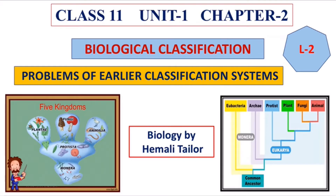They didn't include organisms in groups perfectly. But if we look at Whittaker and Carl Woese, it was quite refined. Whittaker gave a five kingdom classification system, and Carl Woese said that there are three domains of classification. So now we will look at what problems existed in the earlier classification system of Aristotle and Linnaeus, and what solutions came up.